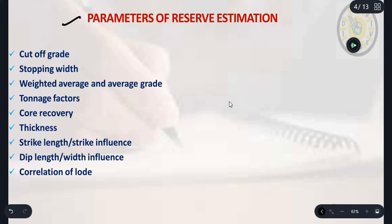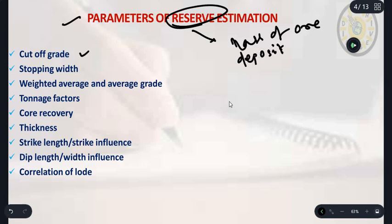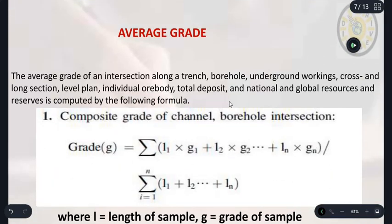We already discussed there are several parameters in which we normally estimate the reserve or riches. Last class we discussed mass of ore. I discussed cut off grade, stopping width - those I will discuss in another video. I will discuss this part: average grade and weighted average grade.